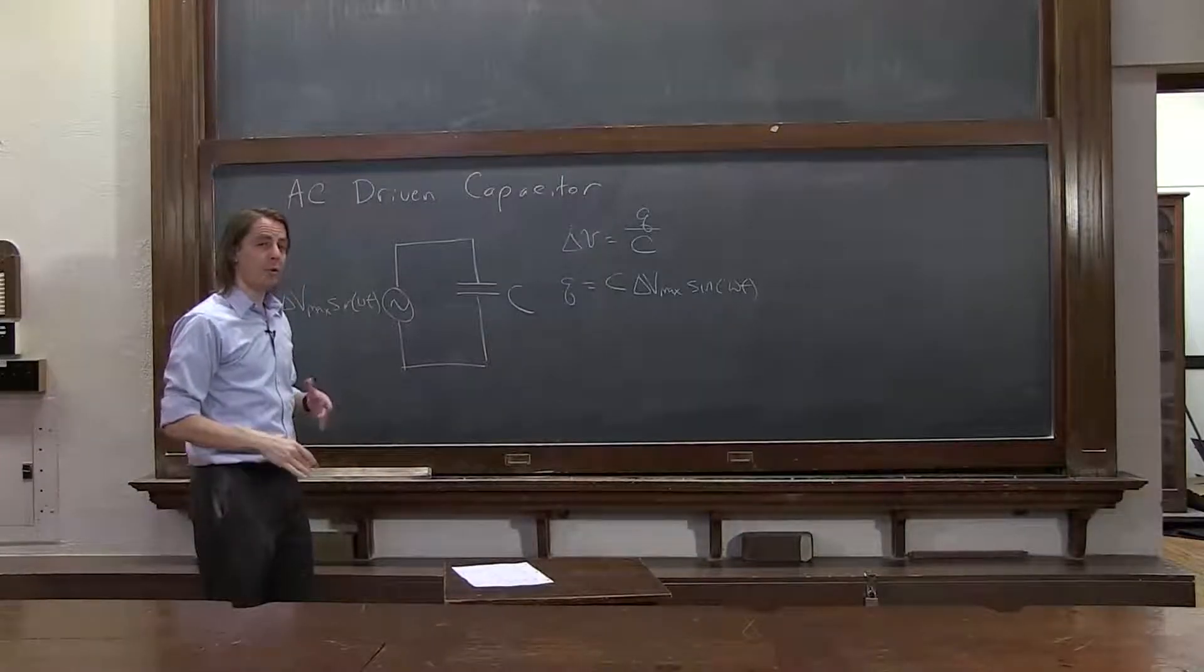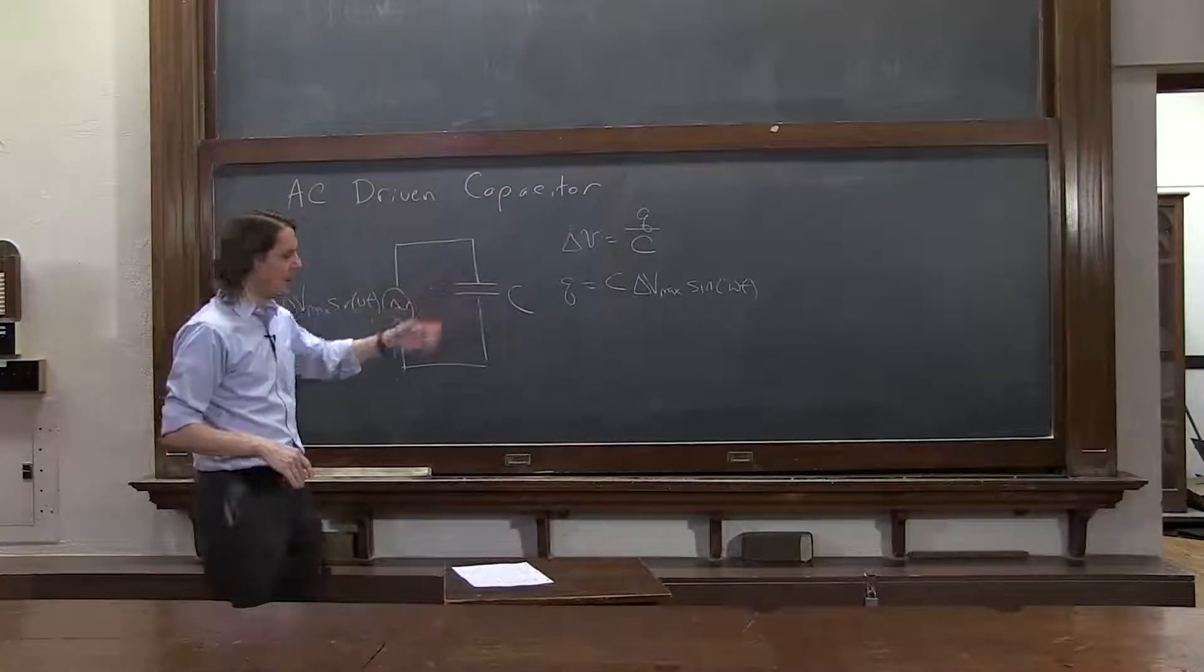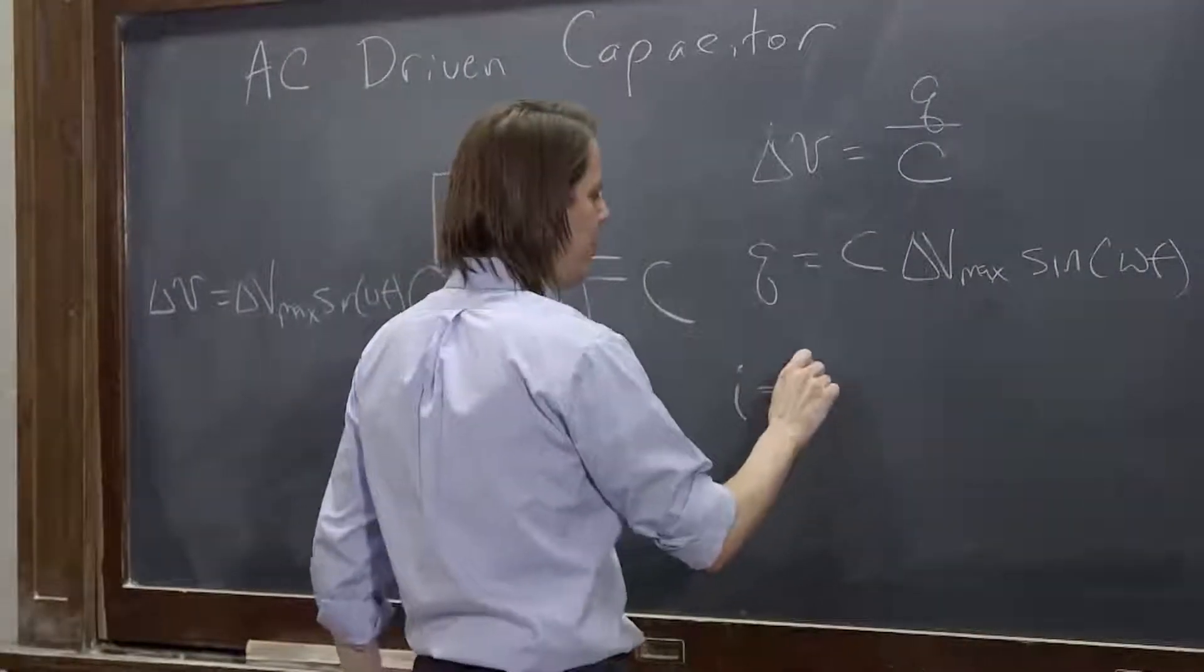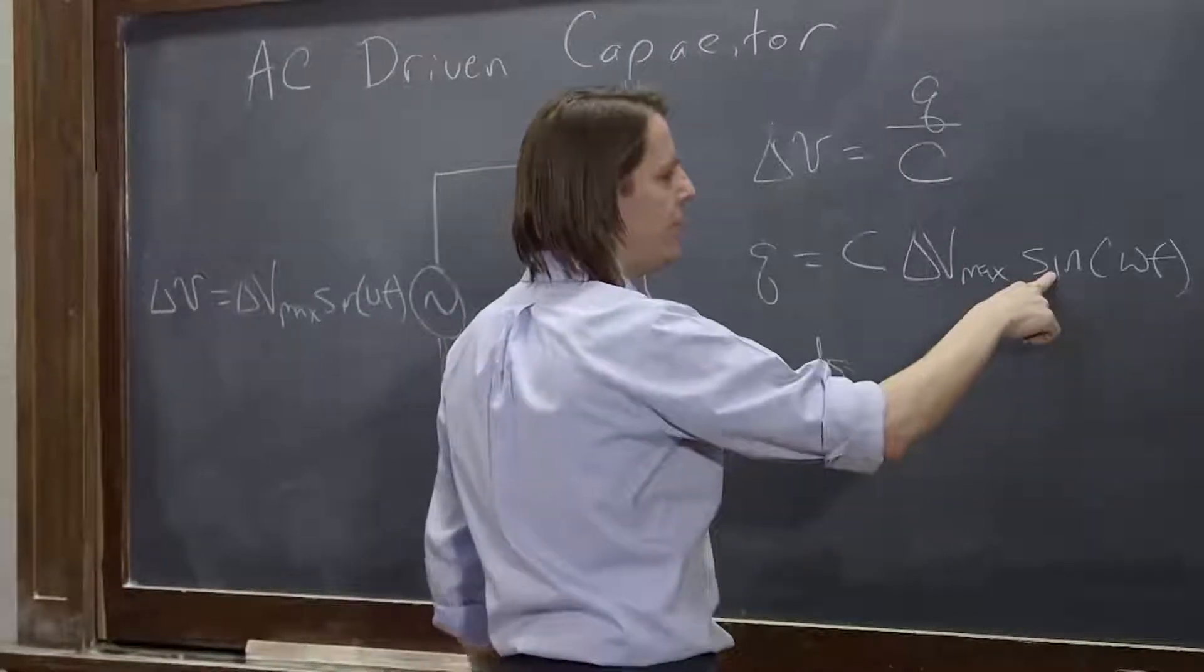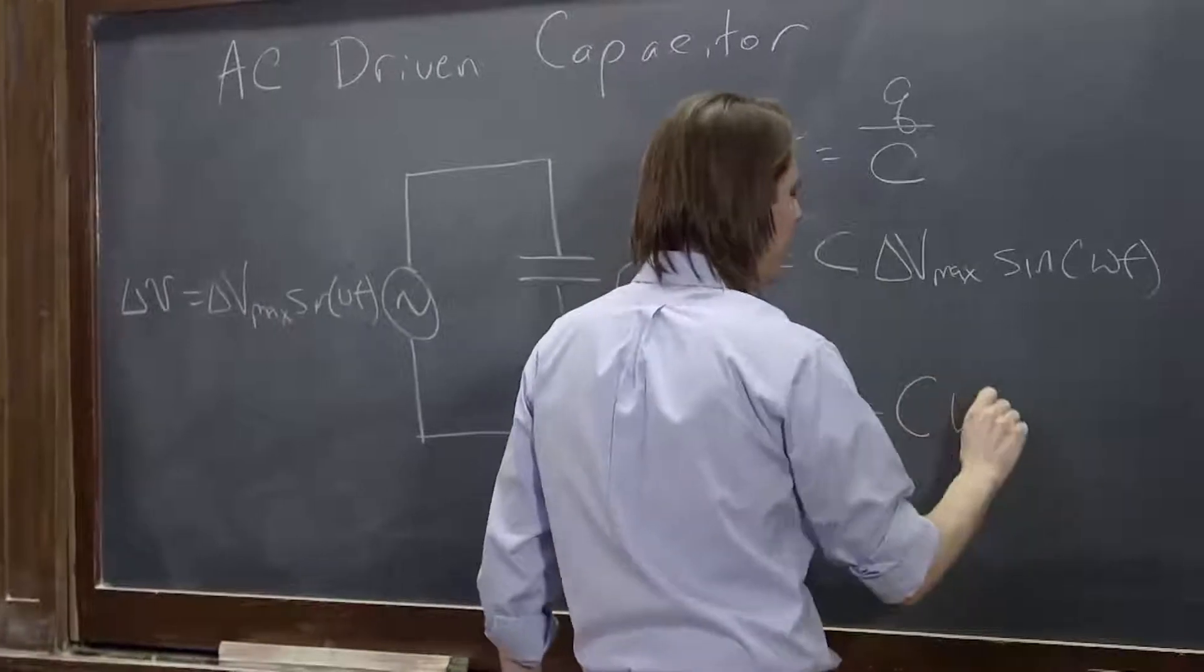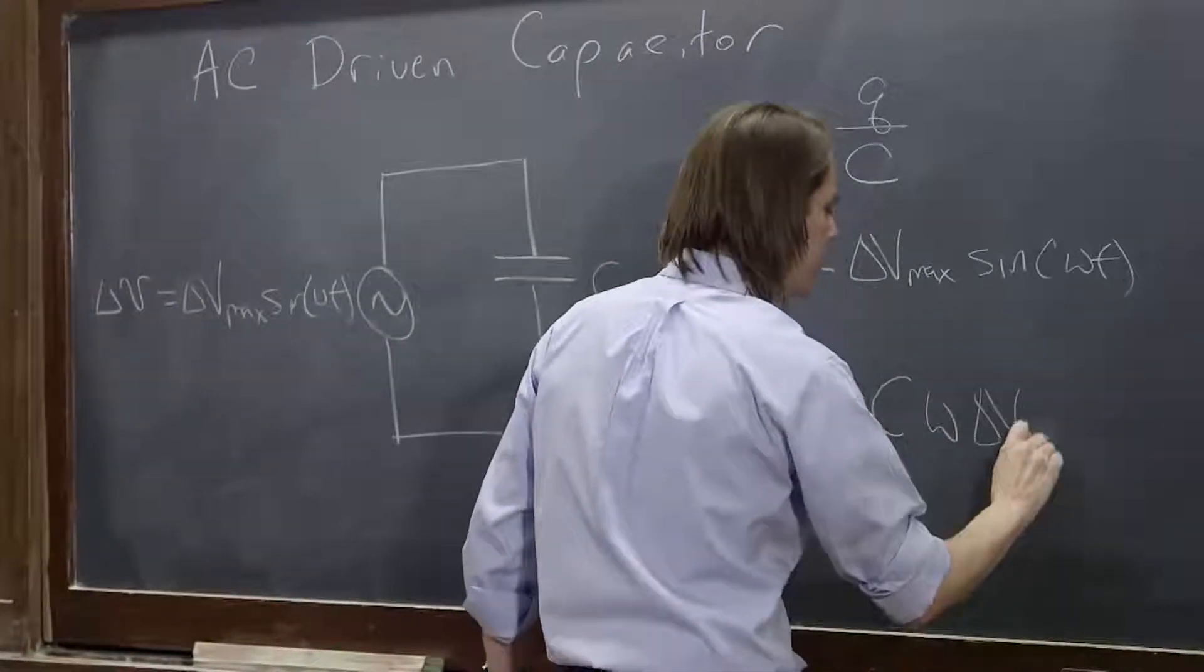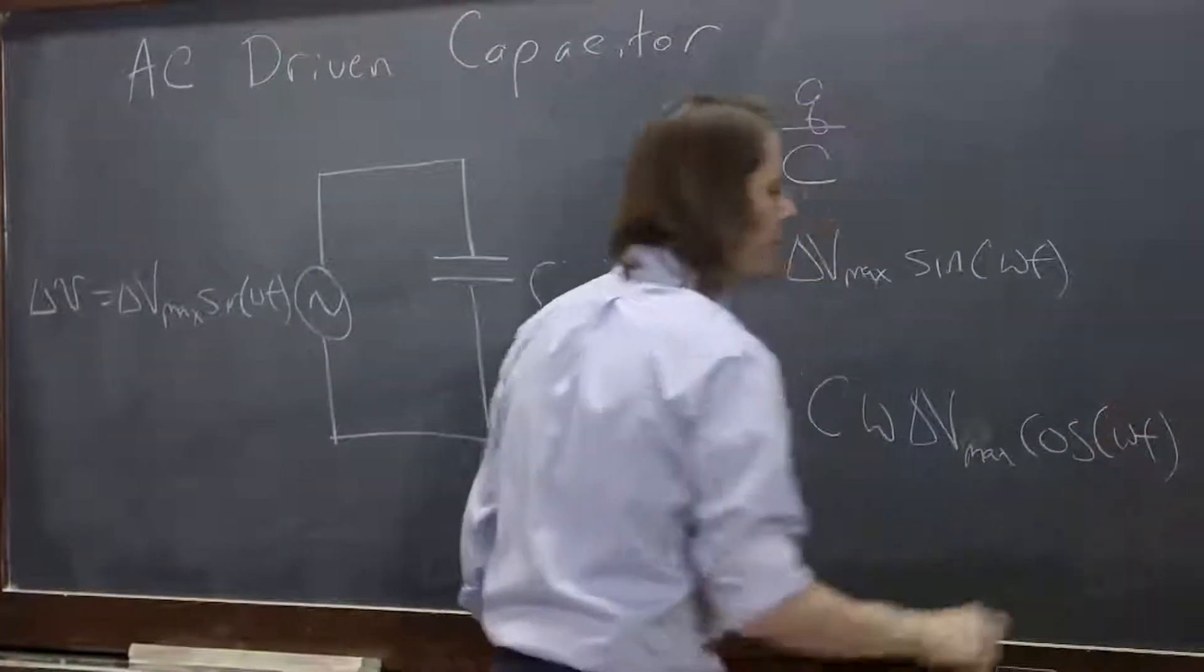And in circuits, we usually care about current, not about charge. So if we wanted the current in the circuit, we'd take the derivative of this. So I, the current, as it varies in time, is dQ dt. So the derivative of sine is cosine. You pull out an omega, you have C omega delta V max cosine omega T.